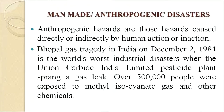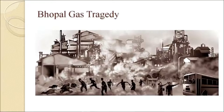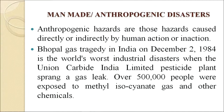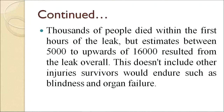Now, coming to man-made or anthropogenic disasters. Anthropogenic hazards are those hazards caused directly or indirectly by human action or inaction. The Bhopal gas tragedy in India on December 2, 1984 is the world's worst industrial disaster, when the Union Carbide India Limited pesticide plant sprang a gas leak. Over 5 lakh people were exposed to methyl isocyanate gas and other chemicals. Thousands of people died within the first hour of the leak, with estimates between 5,000 to upward of 16,000 deaths resulting from the leak overall. This does not include other injuries survivors endured such as blindness and organ failure.